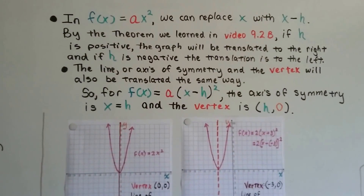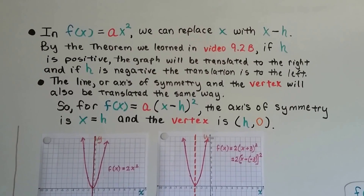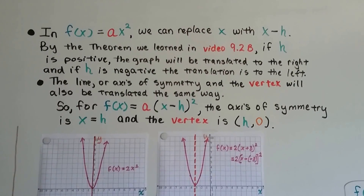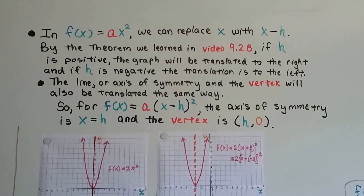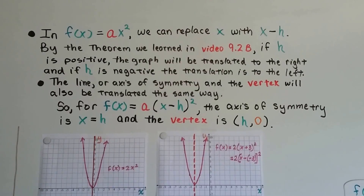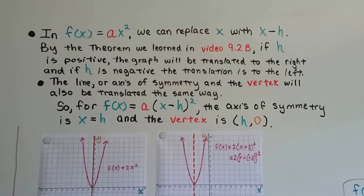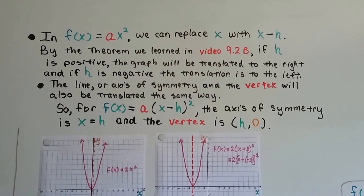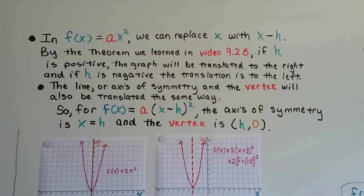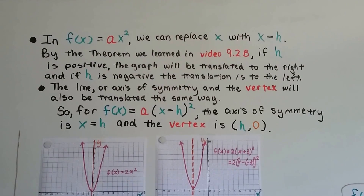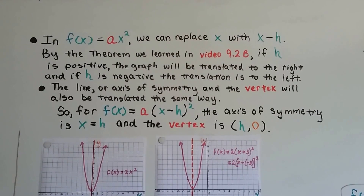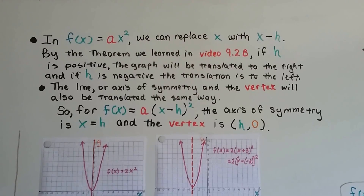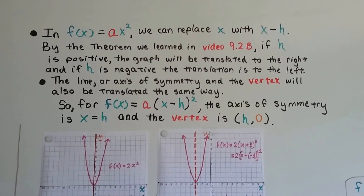In f(x) equals x squared, we replace x with x minus h. By the theorem from video 9.2b, if h is positive the graph is translated to the right, and if h is negative the translation is to the left. The line of symmetry and the vertex are also translated the same way. So for f(x) equals a times the square of the quantity (x minus h), the axis of symmetry is x equals h and the vertex is (h, 0).